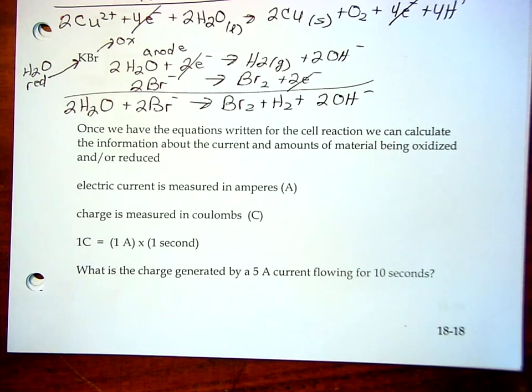So, once we've figured out what the chemistry is, we can write the overall equation for the cell reaction. Now we can start to do some calculations where the mathematics comes in, and we figure out what's being produced and how much energy is required.